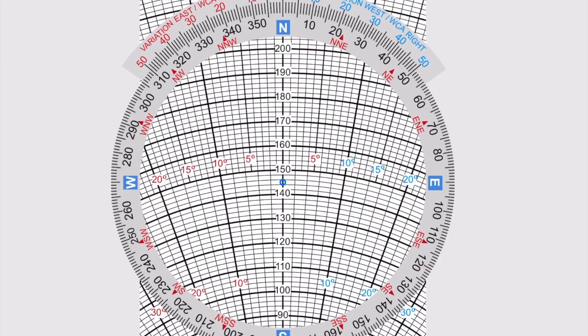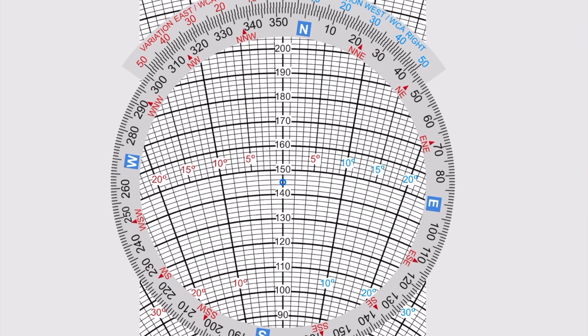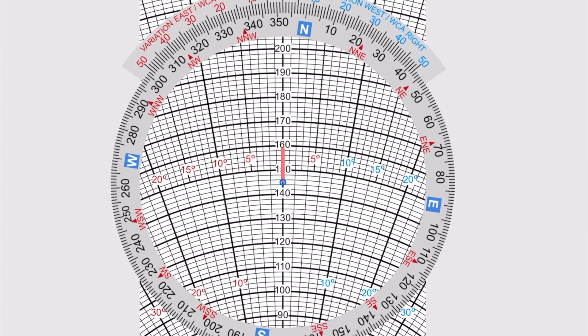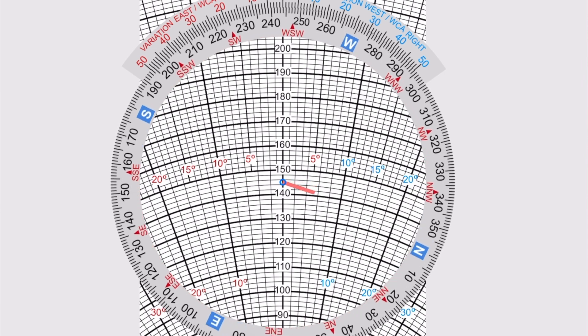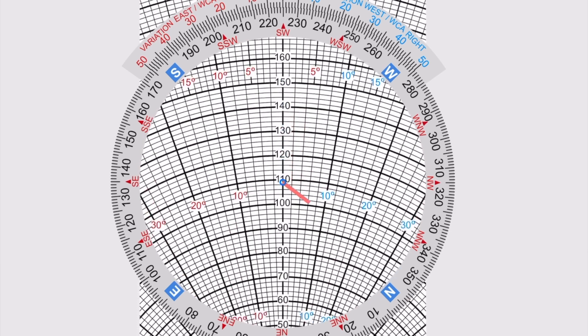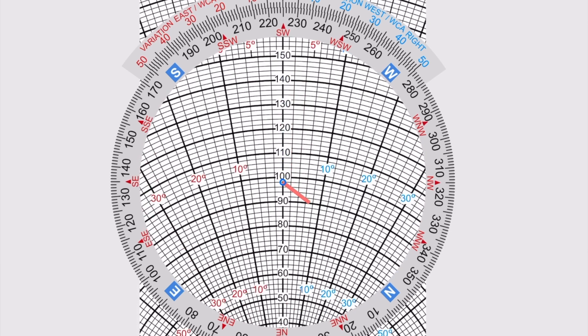Grabbing our E6B and flipping to the wind side, we'll dial in the wind direction of 352 degrees. Now we'll draw the wind velocity of 14 knots straight up from the center. Next, we'll turn the dial to the course direction of 225 degrees, and we'll put the end of the wind line we drew previously on the airspeed from our previous calculations — in our case, that's 90 knots. Now read the ground speed at the center marker, and the result is 98 knots.